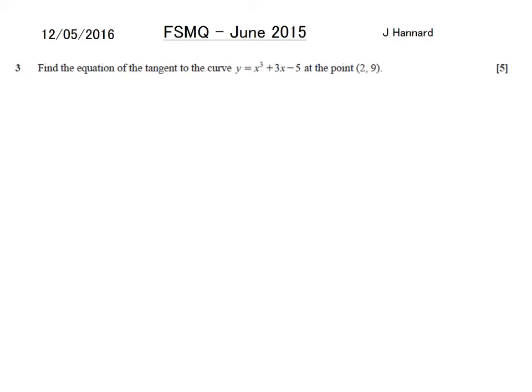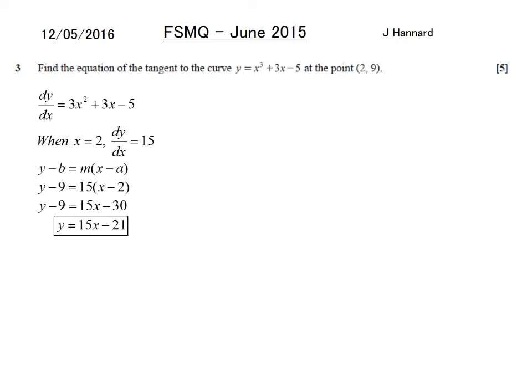Question 3 then, find the equation of the tangent to the curve y equals x cubed plus 3x minus 5 at the point 2, 9. So I've got to get a gradient. I've got my point needing my gradient, so I differentiate with respect to x power to the front, knock 1 off the power. And I get that. Put my x coordinate through, and I get dy dx equals 15. So that must be my gradient of the tangent. That is what I want. y minus b equals mx minus a. Put in your numbers. Expand. Tidy. Job done.